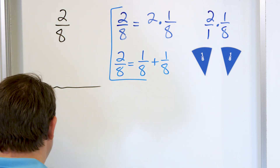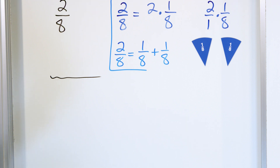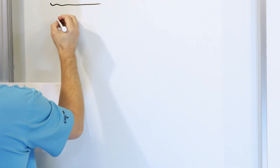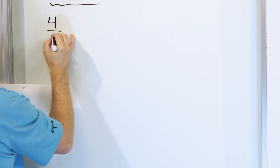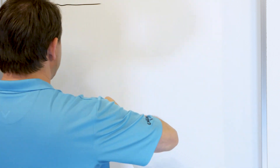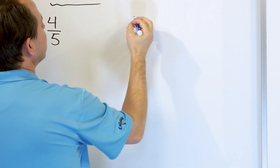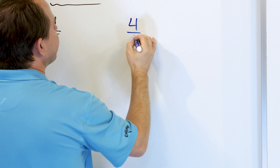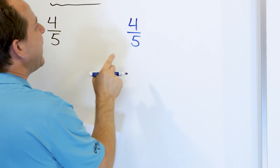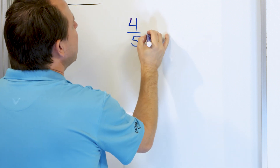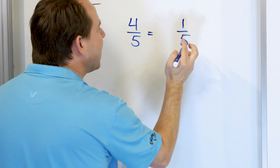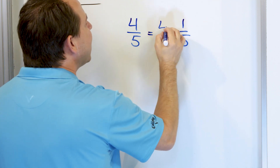Now that all of that talking is out of the way, it's going to be much easier for us to jump in and understand the rest. Let's write the fraction 4/5ths two different ways — as multiplication and then as addition. 4/5ths means we have 4 pieces out of 5, meaning we have 4 slices, each of which is 1/5th.